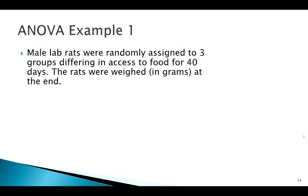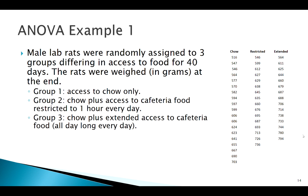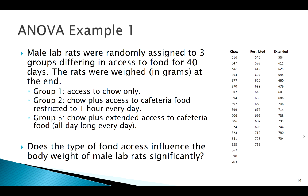Let's look at an example. We've got lab rats in three different groups with regards to how we're gonna feed them for 40 days, then weigh them. Here's the breakdown of each of the three groups: one group only has access to chow, or traditional rat food; the other gets chow plus cafeteria food for an hour a day; the other gets their own chow plus cafeteria food as much as they want. We want to see, does this food access have a significant effect on their weights?